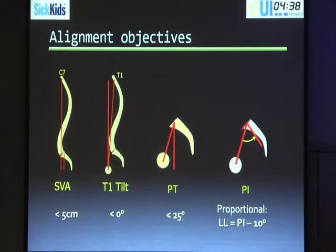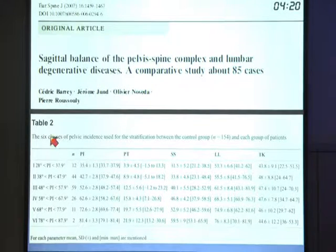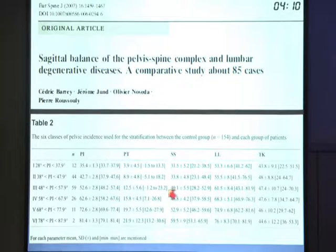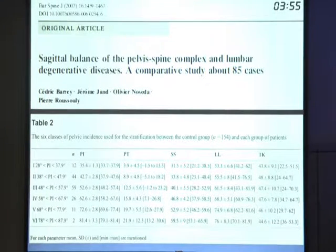Our surgical goals are to have an SVA that's balanced, a T1 tilt close to zero, a pelvic tilt less than 25, and PI minus lordosis less than 25. From a 2007 French study of 150 normal young patients with different PIs: for PI type 3, the average PI is 52 with 12 degrees of pelvic tilt and 40 of sacral slope, and lordosis was around 60. Lordosis increases with increasing PI, but interestingly thoracic kyphosis stays about the same regardless of PI. We have to tailor the lordosis we're trying to give based on the patient's pelvic incidence.